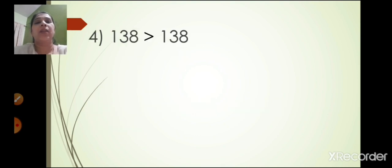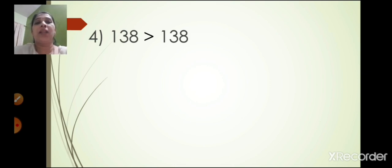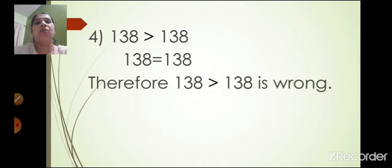The fourth one: 138 is greater than 138. Now you can see both the numbers are the same. So 138 is equal to 138. Therefore 138 is greater than 138 is wrong.